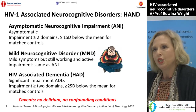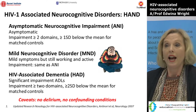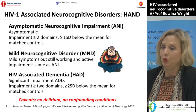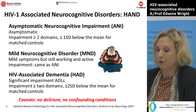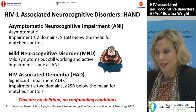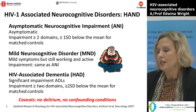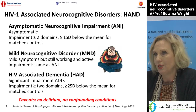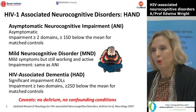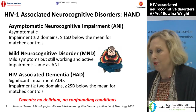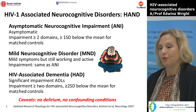HIV dementia is the most severe component of HAND. An individual has really significant impairment in their activities of daily living — they won't be working, couldn't hold down a job, and you couldn't leave them in charge of a house or let them drive. When tested with an intensive neuropsychological battery, they would be very impaired compared to their age and gender-matched controls. It is a diagnosis of exclusion — you have to rule out delirium and other confounding conditions.